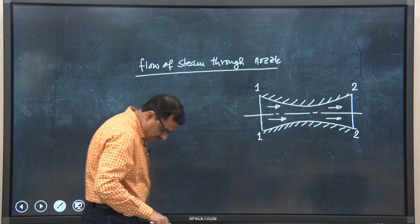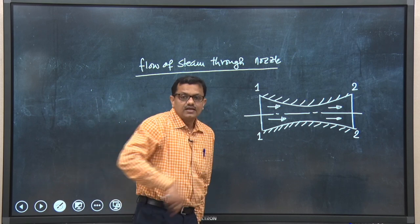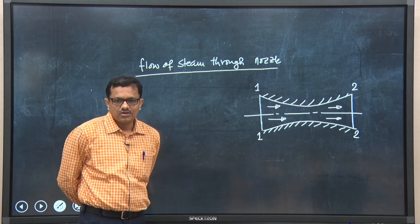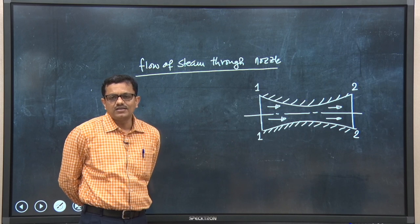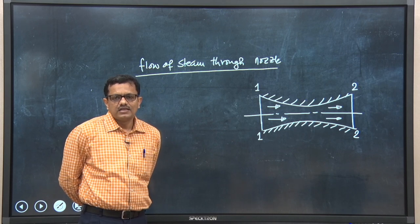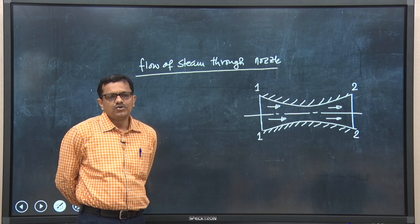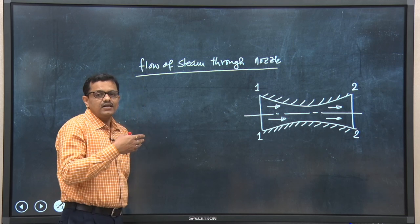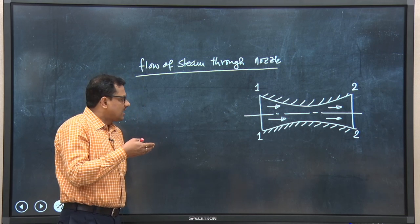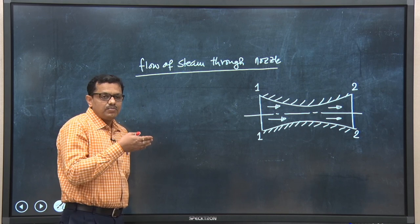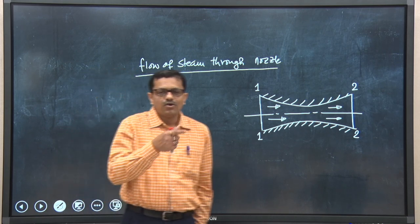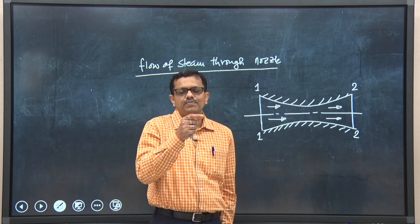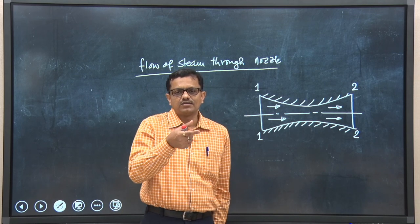We are discussing this again because the nozzle is a mechanical device. While someone is designing the steam nozzle, the designer must be careful about the efficiency of the nozzle. By knowing this particular parameter, we can predict what would be the actual kinetic energy or available kinetic energy of the jet at the exit of the nozzle.